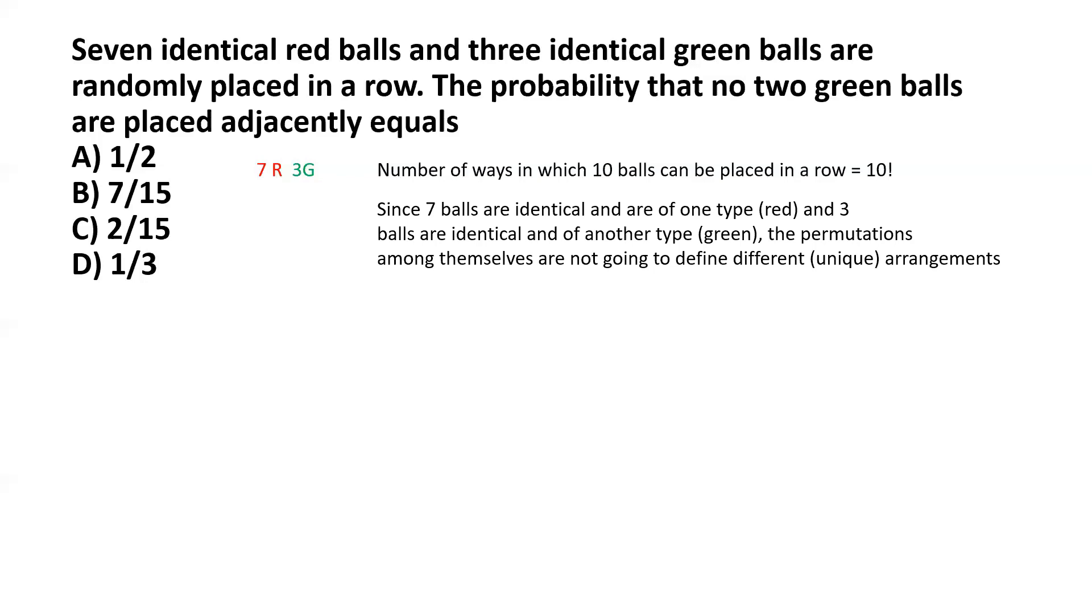In order to find the true number of unique arrangements of seven identical red and three identical green balls, we need to divide factorial ten by factorial seven multiplied by factorial three in the denominator. When we take care of that, the total number of unique arrangements becomes 8 times 9 times 10 in the numerator, 6 in the denominator, and we get that number as 120.